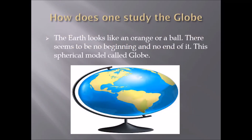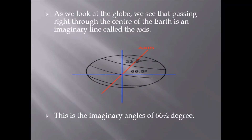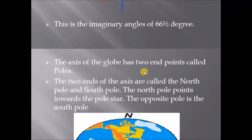How does one study the globe? The Earth looks like an orange or a ball — there seems to be no beginning and no end of it. This spherical model is called a globe. As we look at the globe, we see that passing right through the center of the Earth is an imaginary line called the axis. This imaginary axis is at an angle of 66 and a half degrees.